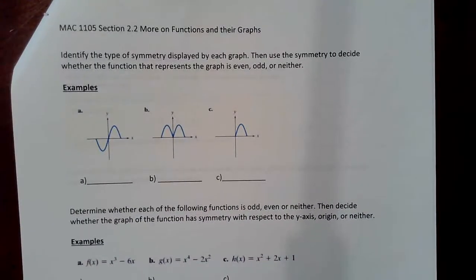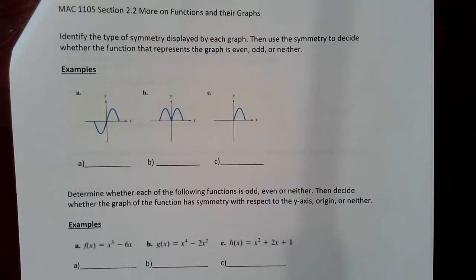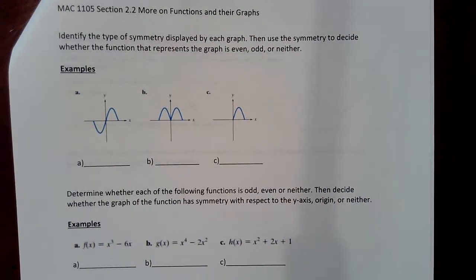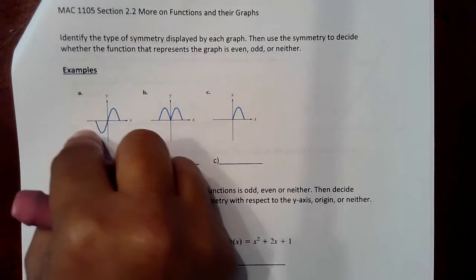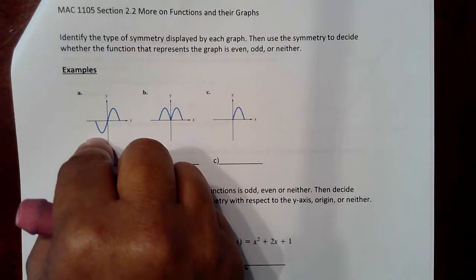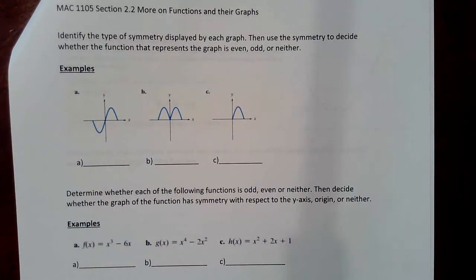Moving to the next page, we're not doing any algebraic tests — just a visual check on what kind of symmetry a graph has. If it has y-axis symmetry, it will have matching images on either side of the y-axis. If it has x-axis symmetry, it will have matching images above and below the x-axis. If it has origin symmetry, the figure can be superimposed after a 180-degree twist.